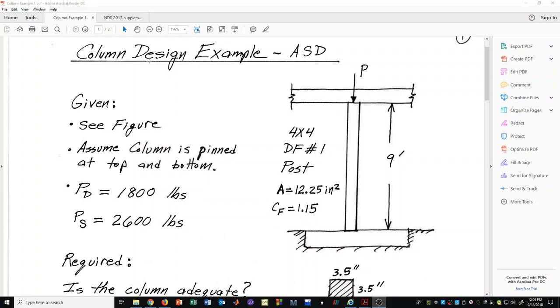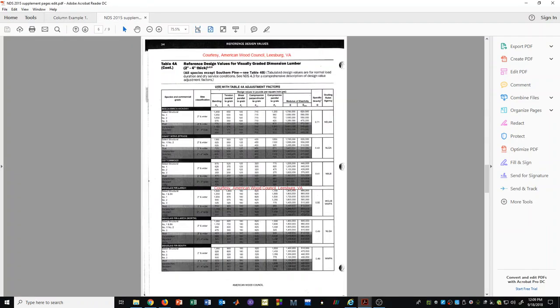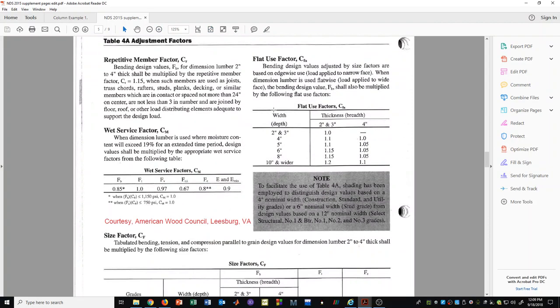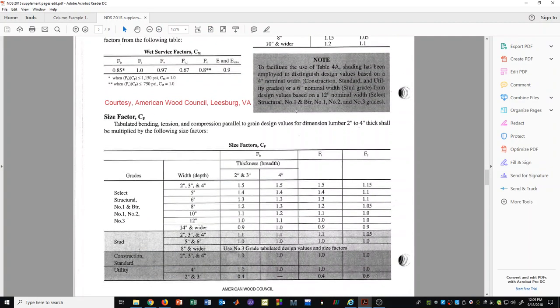We also could look up in the supplement that for a four by four there's going to be a size factor that we could look up in this table. In this table for the size factor for a four by four Douglas fir number one, if we look under compression parallel to grain, we see that the size factor is 1.15.